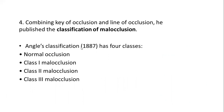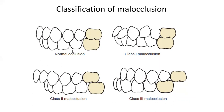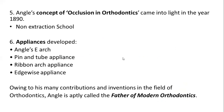Angle's classification has four classes: normal occlusion, Class I malocclusion, Class II malocclusion, and Class III malocclusion. Normal occlusion and Class I malocclusion are quite similar when looking at the molar relationship — the difference is in their alignment; there is slight crowding in Class I malocclusion. Angle was a strong proponent of the non-extraction philosophy because he believed that for good functional occlusion you needed the full complement of teeth.